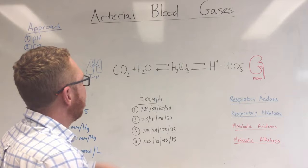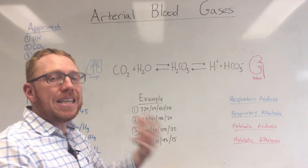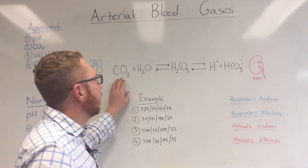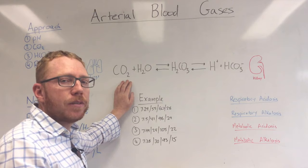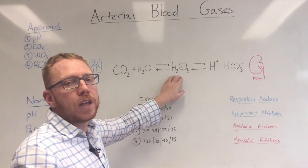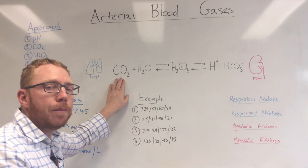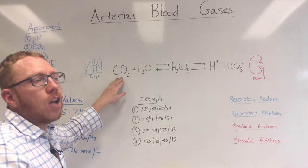Starting at one end of the equation: we have carbon dioxide and water. Carbon dioxide is made by every single cell in your body — it's made by the use of glucose and oxygen to make ATP, and as a by-product we make CO2. CO2 then quickly meets up with water, so about 70% of your carbon dioxide will form with water to give you carbonic acid, which goes into your blood and gets transported to your lungs where it will be breathed out.